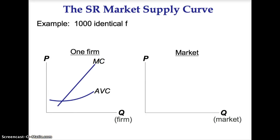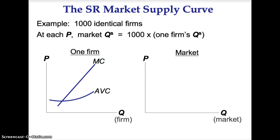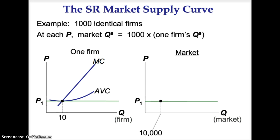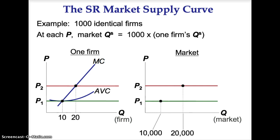Suppose there are a thousand identical firms in the market. At each price, the market quantity supplied is 1,000 times the firm's quantity supplied. For example, at P1, one firm is supplying 10 units, so the market supplies 10,000. At P2, one firm is supplying 20 units, so the market supplies 20,000 units.